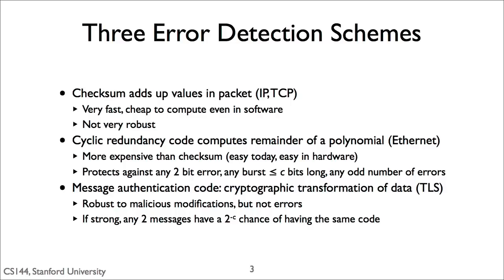Message authentication codes are used in Transport Layer Security, TLS, which is what you use when you browse web pages securely — HTTPS. But they're actually not great for catching errors. If I flip a single bit in a packet, there's a 1 in 2^c chance that the changed packet will have the same MAC. I've seen people make this mistake with format error correction, thinking a MAC is just as good as a CRC — it's not. If I have a 16-bit CRC, I'm assured I'll detect a burst of errors that is 16 bits long or shorter. If I have a 16-bit MAC, I'm only assured that I'll detect bit errors with very high probability: 99.98%, or 1 in 65,536. That's high, but think about how many packets you've processed just receiving this video.